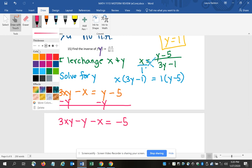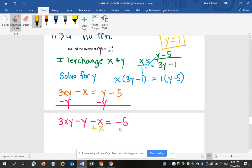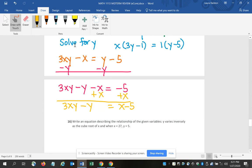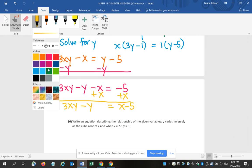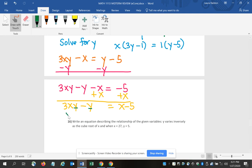Then I notice on the left I have this extra x that doesn't have a y with it. So I'm going to move it to the other side so that I have 3xy minus y equals x minus 5. I then notice that on the left I have – both pieces have a y, so I'm going to factor that out as a common factor and I'm left with y times 3x minus 1 equals x minus 5 and I'm almost home free.